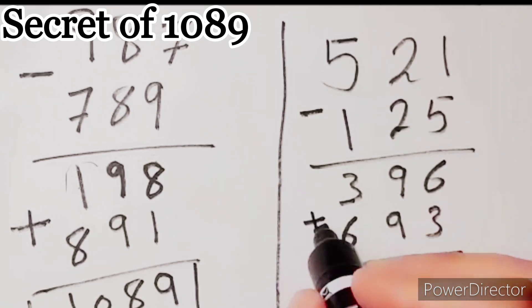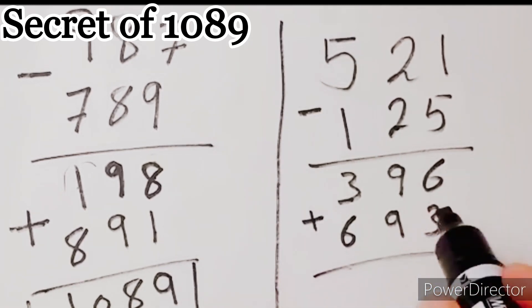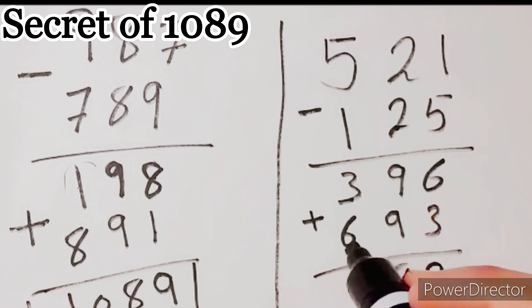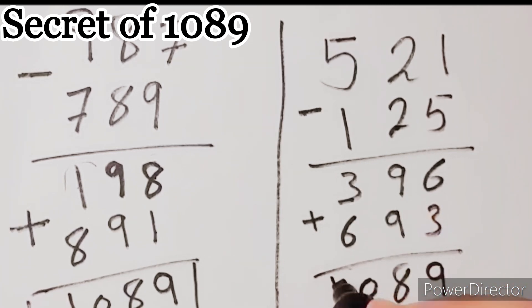Last step, find the sum of the two numbers. 6 plus 3 equals 9, 9 plus 9, 18, 1 plus 3 plus 6 equals 10. So, the sum of the numbers, or the result is 1089.